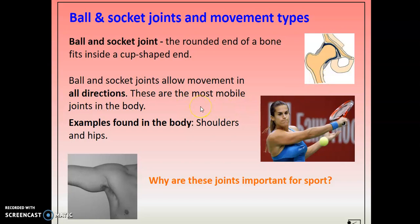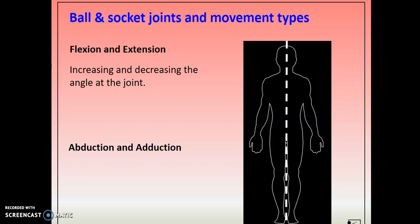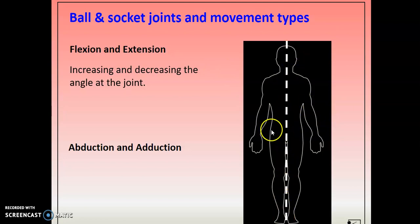Ball and socket joints allow a lot more movement — they're the most mobile joints in your body, found in your shoulder and hip. A round-shaped bone fits into a disc-shaped bone, which allows the greater range of movement. These joints allow flexion and extension: raising your arm forward at the shoulder is flexion, pulling it back is extension. At the hip, bending to touch your toes is flexion, standing upright is extension.